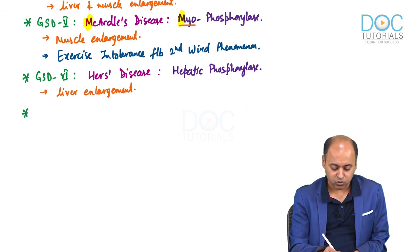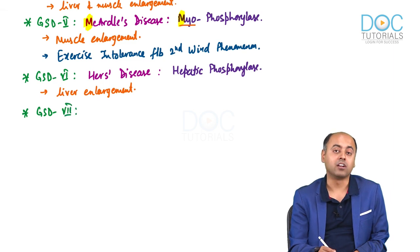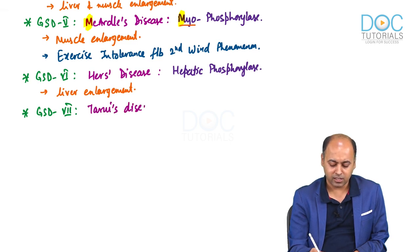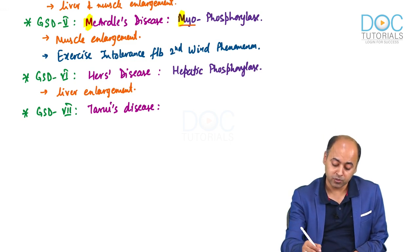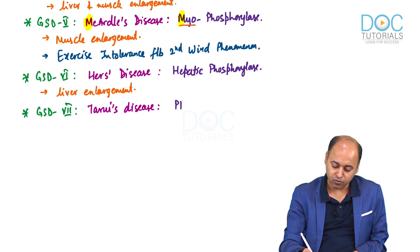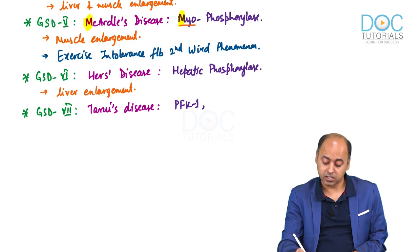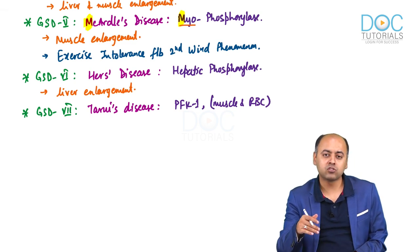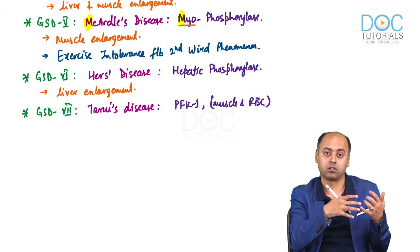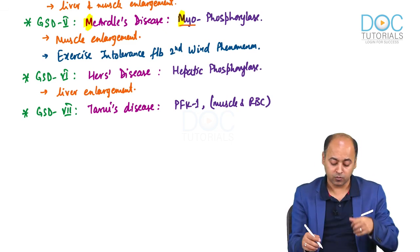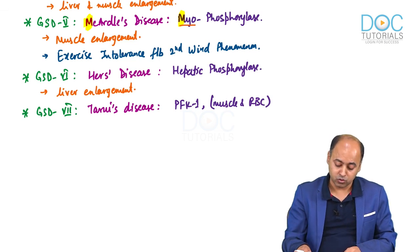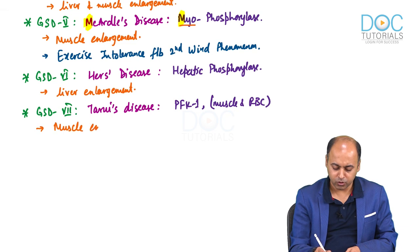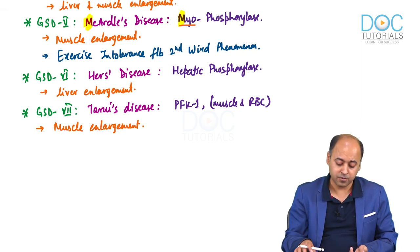We also have GSD type 7, previously known as Tarui's disease. Here the actual problem is not in the enzymes of glycogen metabolism — what is deficient is phosphofructokinase type 1 (PFK1) in the muscle and in the RBC. If PFK1 is not working, glycolysis will not work properly, so glycogen breakdown will be blocked. When a lot of glucose and glucose-6-phosphate accumulate in the muscle, breakdown stops and glycogen storage can occur. There will be muscle enlargement because it is affecting only muscle and RBC.